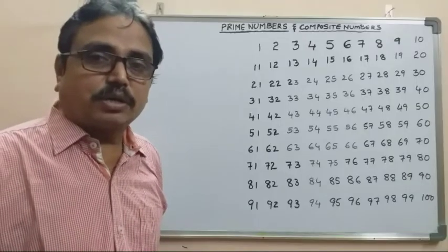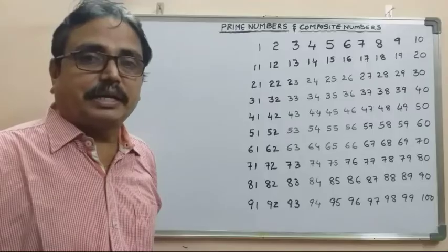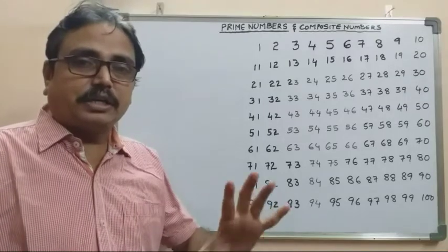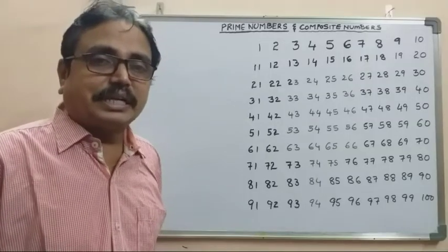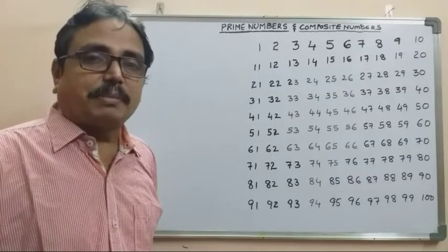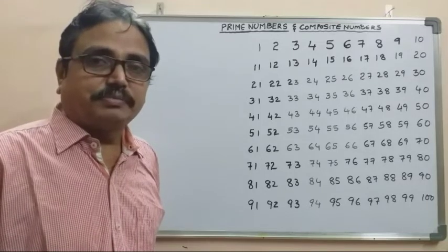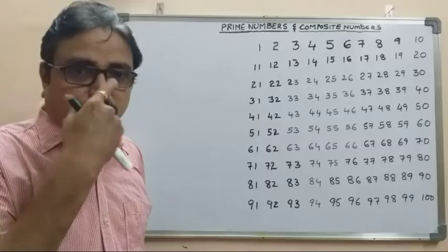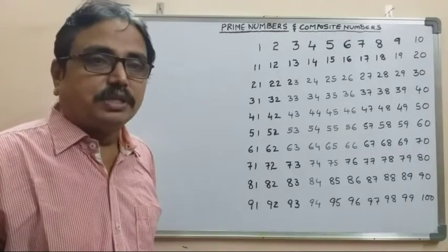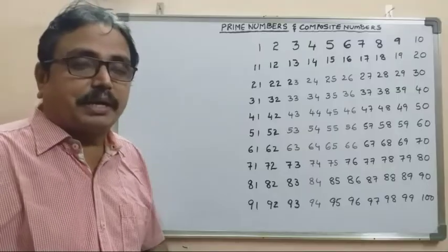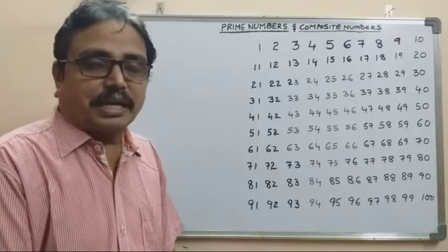We are going to find the prime numbers between 10 and 25, and the set C is equal to all the composite numbers less than 25.